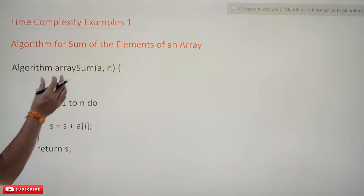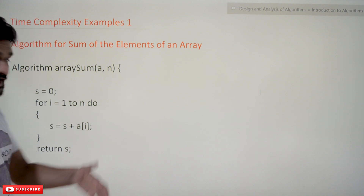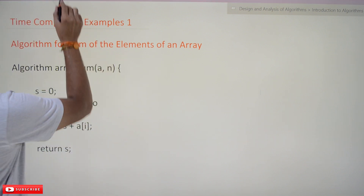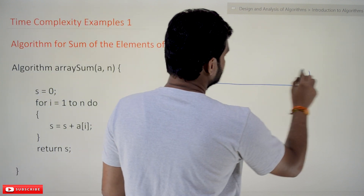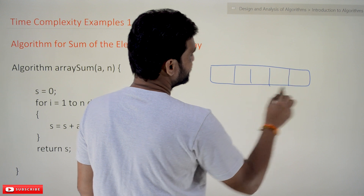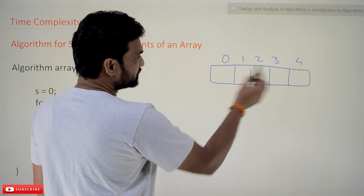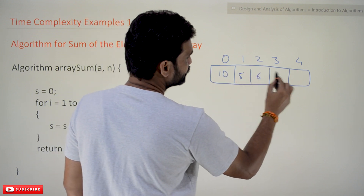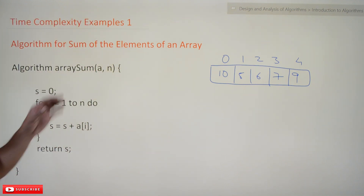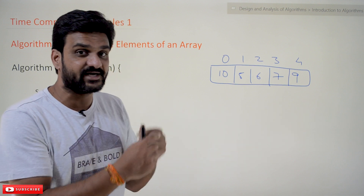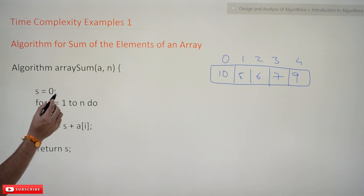In this class we'll try to find the time complexity of this algorithm. The algorithm is 'sum of elements of an array.' Given an array with some elements, the job of this algorithm is to sum all those elements and return the final result. We have taken initially s = 0.